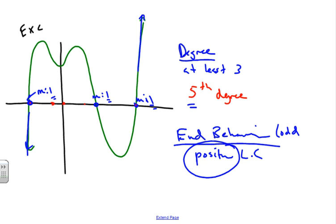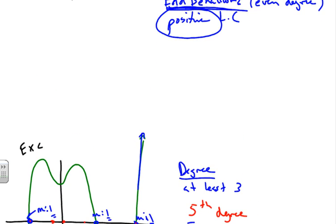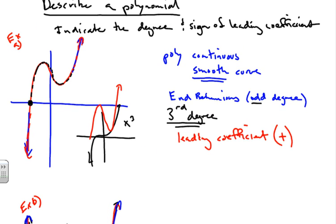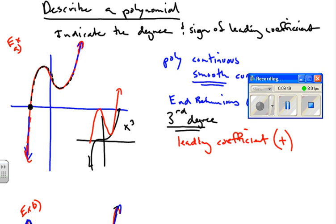We went through three different examples of how to identify the degree and leading coefficient of a polynomial when given just the graph. Hope this helps you on identifying and knowing more about polynomials. Good luck on the rest of your homework and all your studies in this area. Thank you.